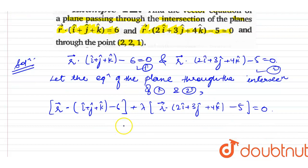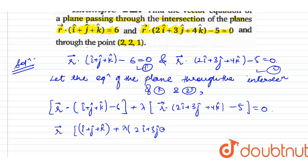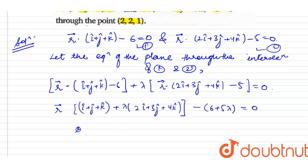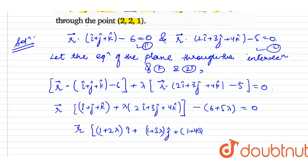Taking r-vector common, this becomes: r-vector dot [(1 plus 2lambda) i-cap plus (1 plus 3lambda) j-cap plus (1 plus 4lambda) k-cap] equals 6 plus 5lambda. Let this be equation number 3.